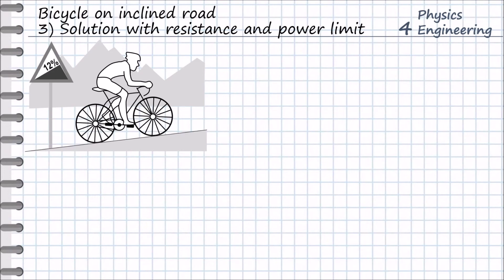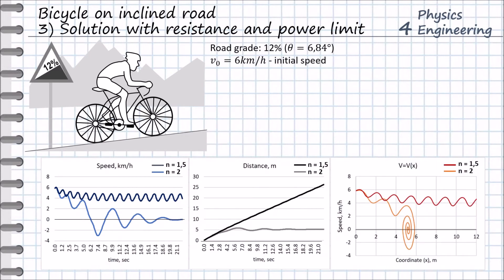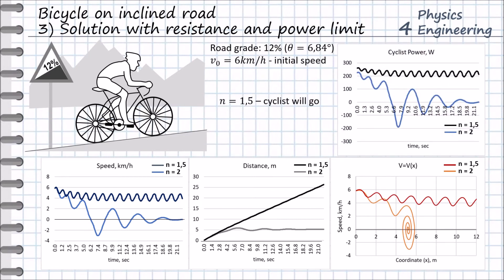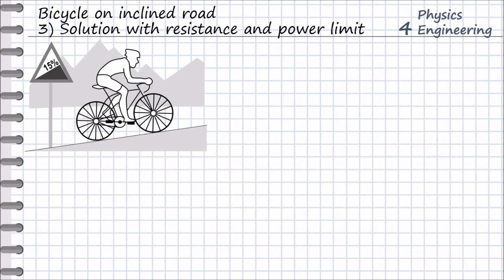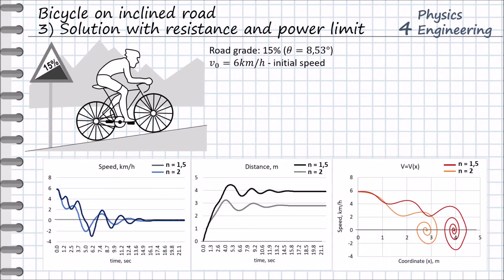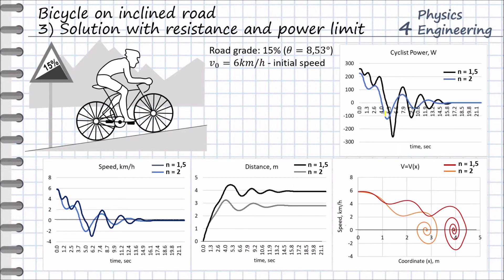On a 12% grade with an initial speed of 7 kph, the solution graphs indicate that the cyclist can ride on the first gear but will not ride on the second gear. Then on the 15% grade with an initial speed of 6 kph, the solution says the cyclist will not be able to ride over the 15% grade. He will go 3 or 4 meters and then stop. His power will drop, and since the cyclist cannot go backwards, the conclusion is that 15% grade is too high for the cyclist on both first and second gear.